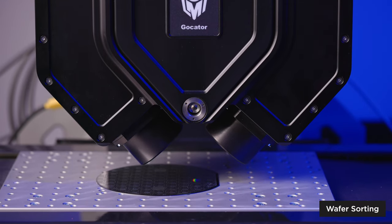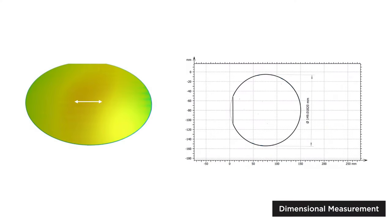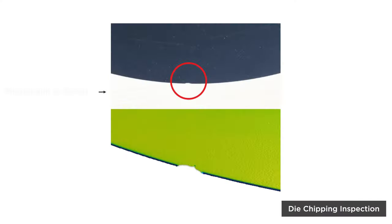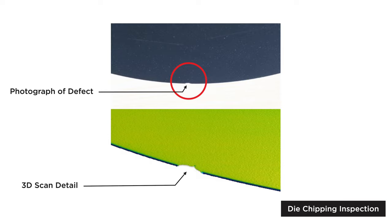Measuring the thickness, flatness, bow, warp, and notch alignment of silicon wafers with submicron accuracy and repeatability. This enables fast and efficient sorting of wafers according to their quality and specifications.